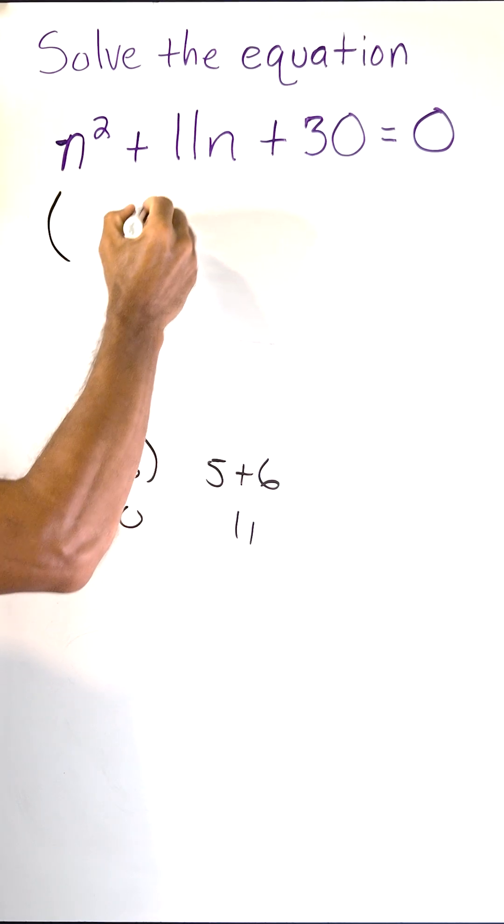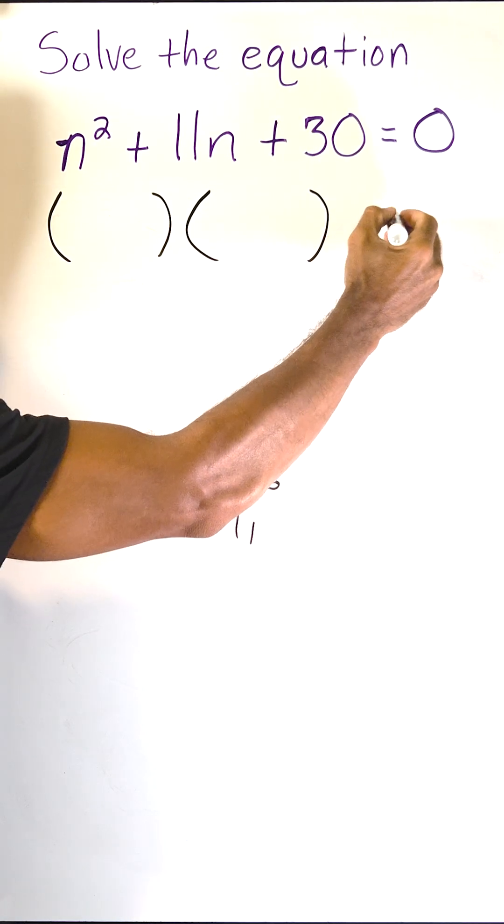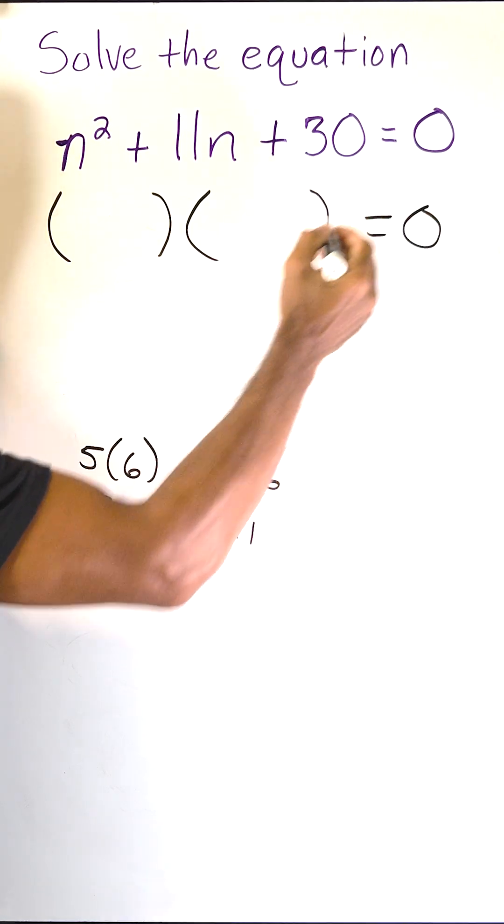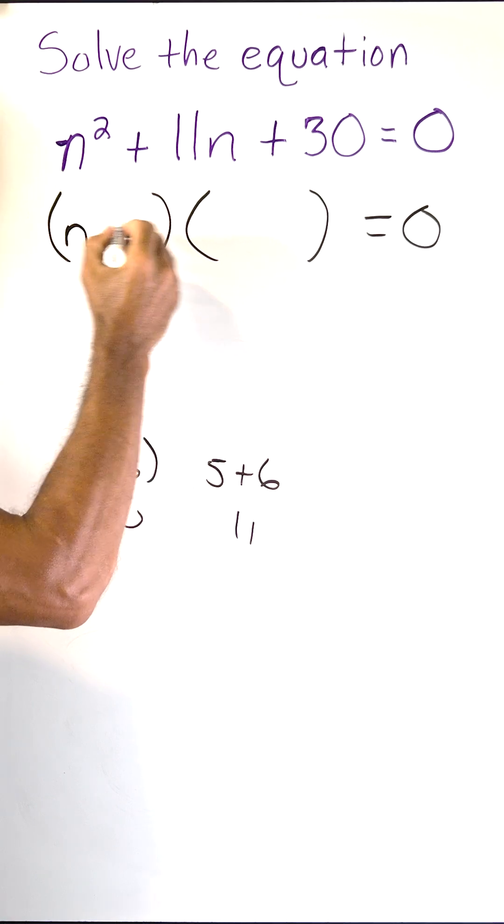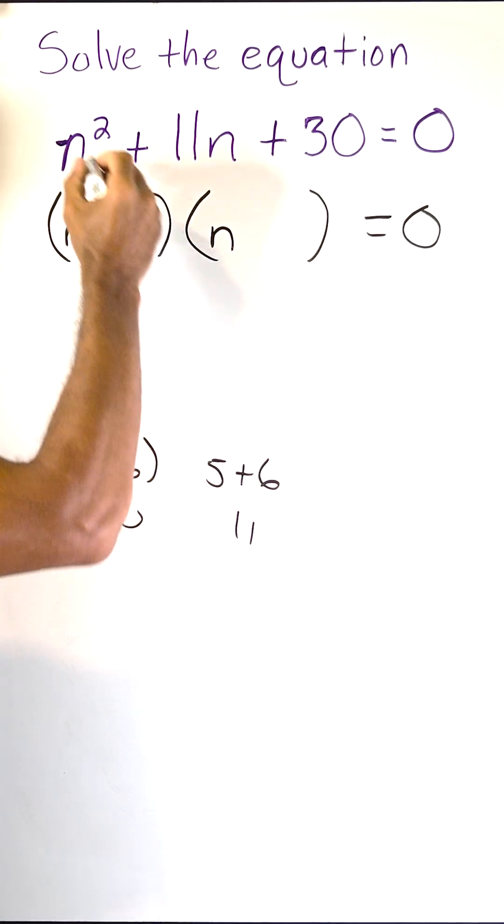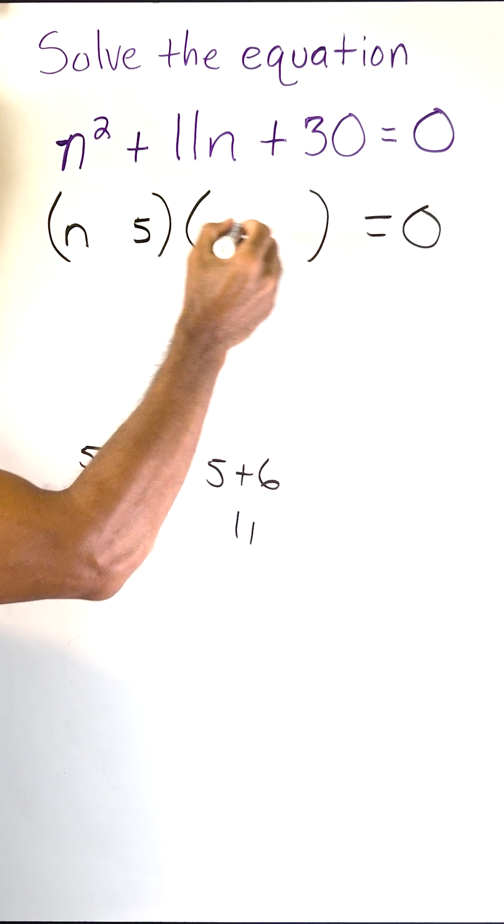So let us go ahead and write a set of parentheses here and here and set those products equal to 0. And we know the first position in each set of parentheses must be n because n times n is n to the second power. And as we said before, 5 times 6 is 30.